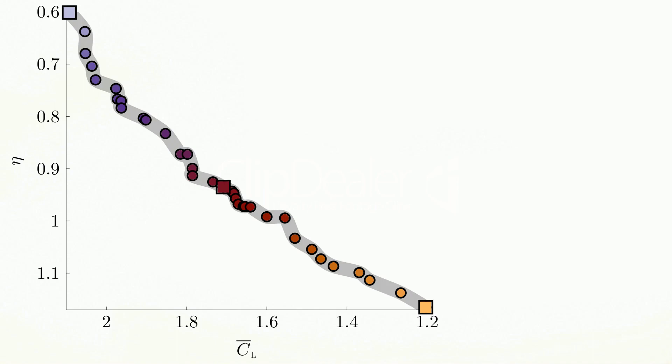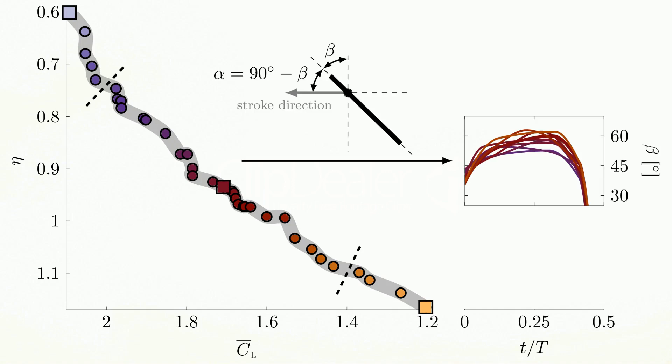The higher lift producing kinematics have a lower pitch angle which translates to a higher angle of attack while also featuring a minima just before mid-stroke.